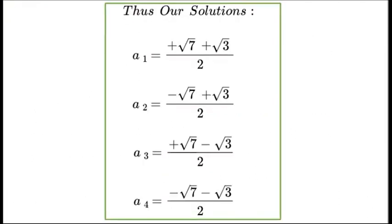Thus our solutions are a1, a2, a3, and a4, which are all versions of plus and minus square root 7 plus and minus square root 3, all over 2. And there's our full set of answers. I hope you enjoyed this video. Thanks a lot for watching.